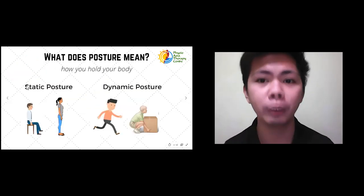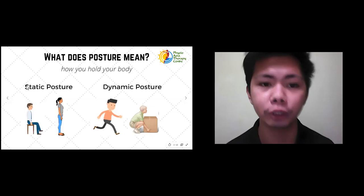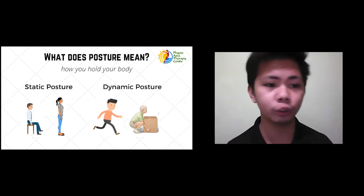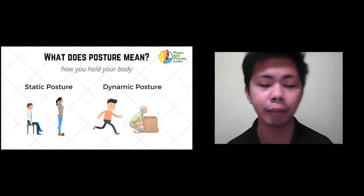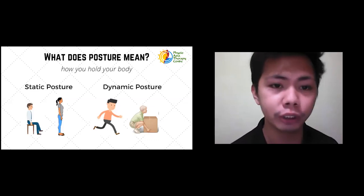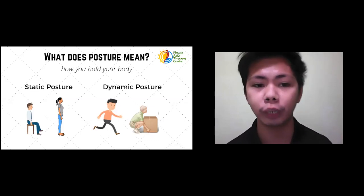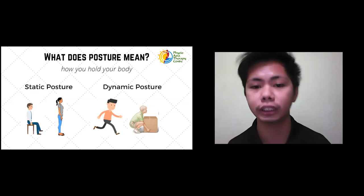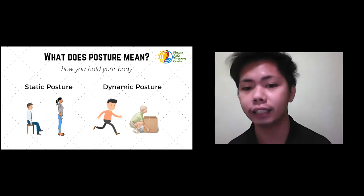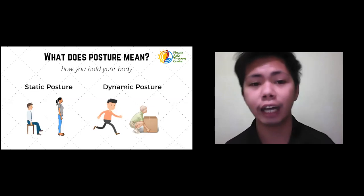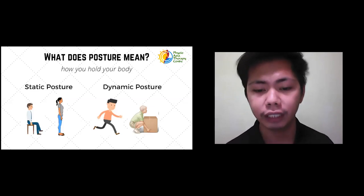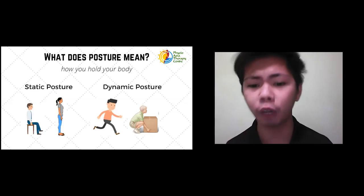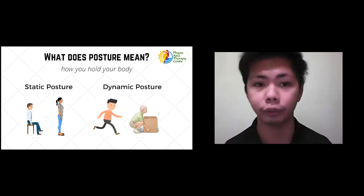So what does posture mean? Basically, posture is how you hold your body. It can be divided into two: static posture and dynamic posture. Static posture is how you hold your body when you are not moving — like when you are sitting, standing, or lying down. Dynamic posture is how you hold your body while moving, like when you are jumping, walking, lifting an object, or picking an object from the floor.